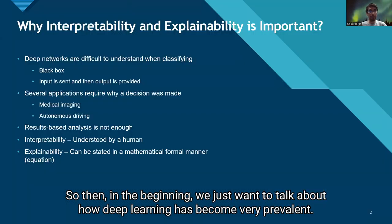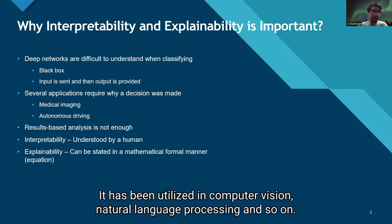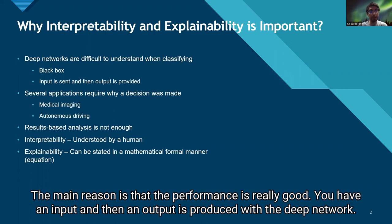In the beginning, we want to talk about how deep learning has become very prevalent. It's been utilized in computer vision, natural language processing, and so on. The main reason is that the performance is really good. You have an input, and then an output is produced with the deep network, so it's considered a black box.